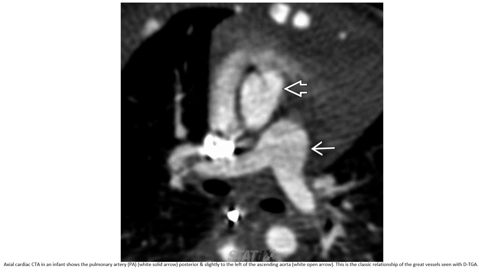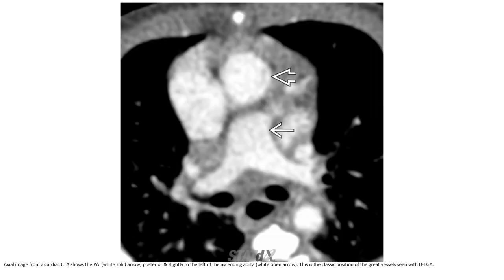Axial cardiac CTA for assessment of coronary artery anatomy: the pulmonary artery is posterior and slightly to the left of the ascending aorta. This is the classic relationship of the great vessels seen in D-TGA.